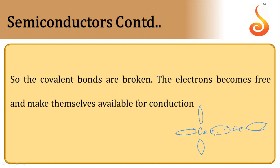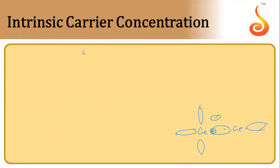Because of the thermal energy, an electron gets free and becomes available for conduction. Where the electron left, there will be a deficiency of electron known as a hole. So when one electron is produced, one hole is generated. Overall, the atom remains electrically neutral because the number of positive charges and negative charges remain equal.